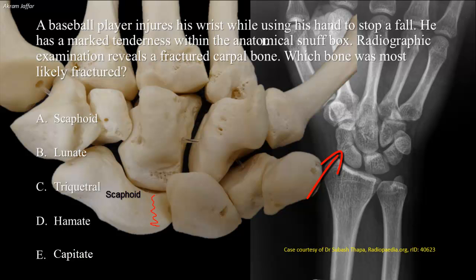Tenderness in the snuff box is an important sign of a fractured scaphoid, which is the most frequently fractured bone of the carpals.